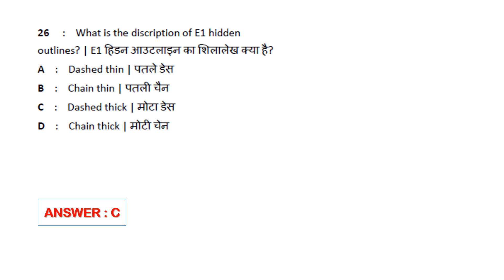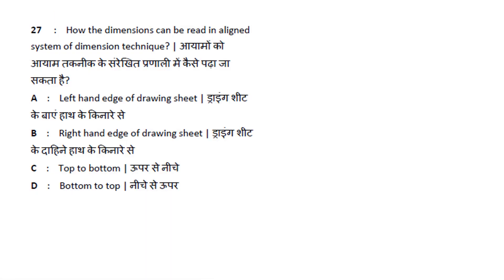How can dimensions be read in the aligned system of dimensioning? In the aligned system, dimensions are read from the right-hand edge of the drawing sheet. The answer is option B — right-hand edge.